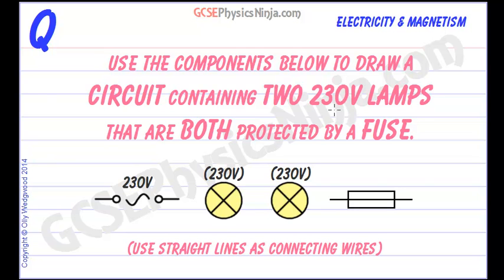How would you draw a circuit containing two 230 volt lamps so that both lamps are protected by a fuse? Here are our symbols.